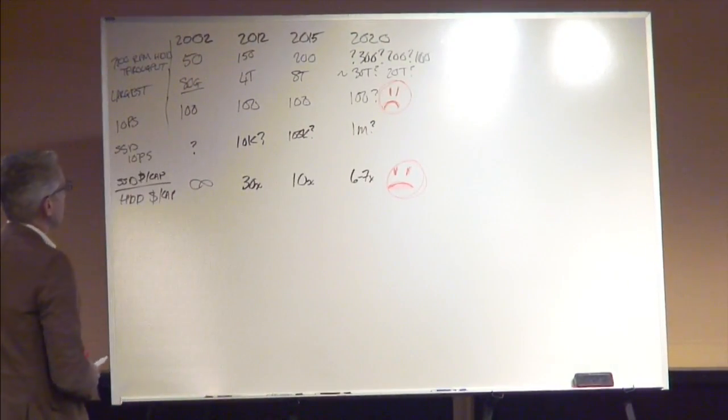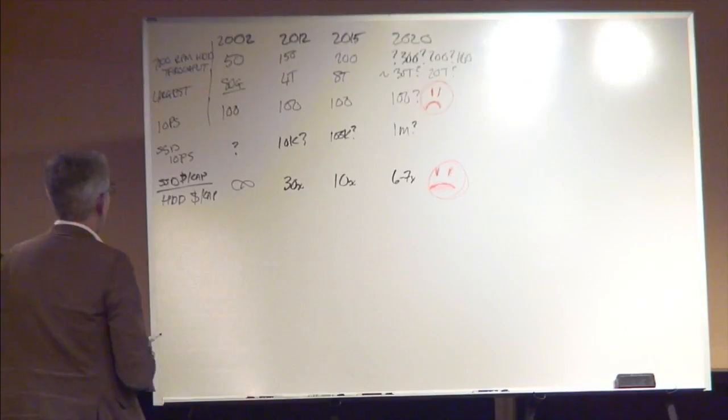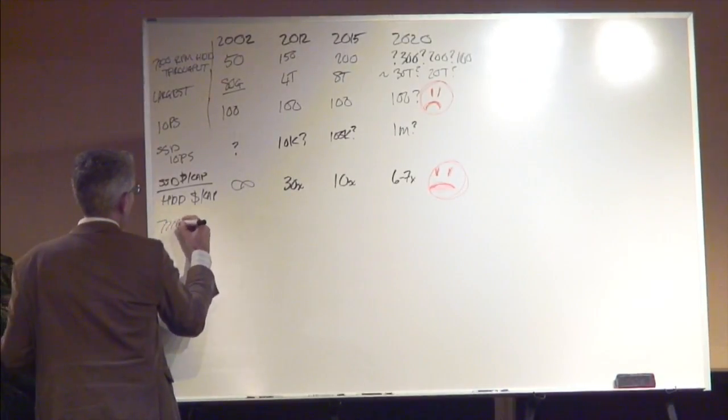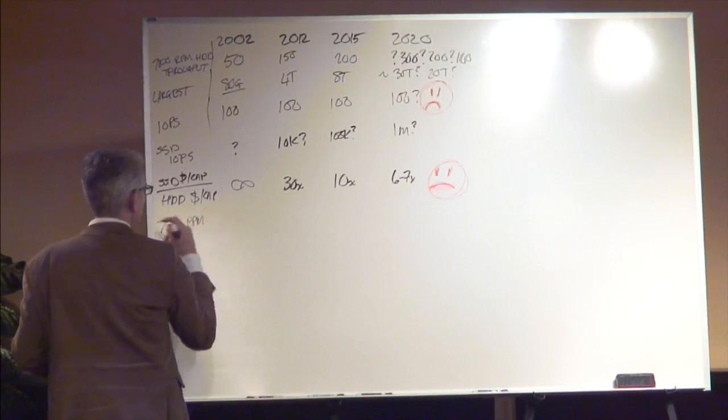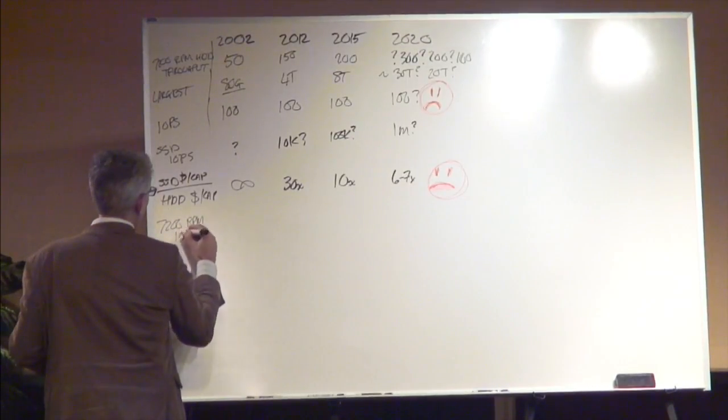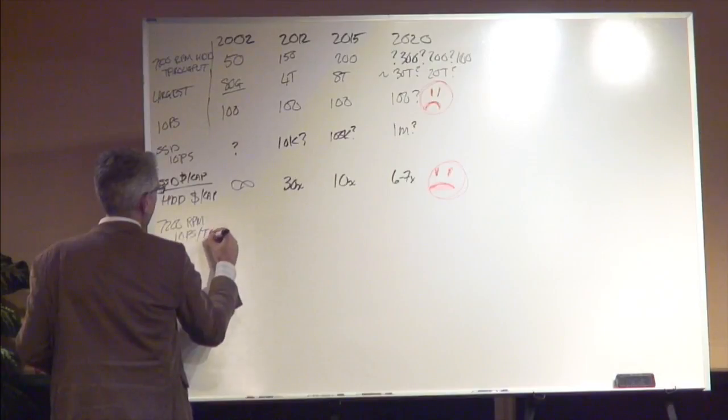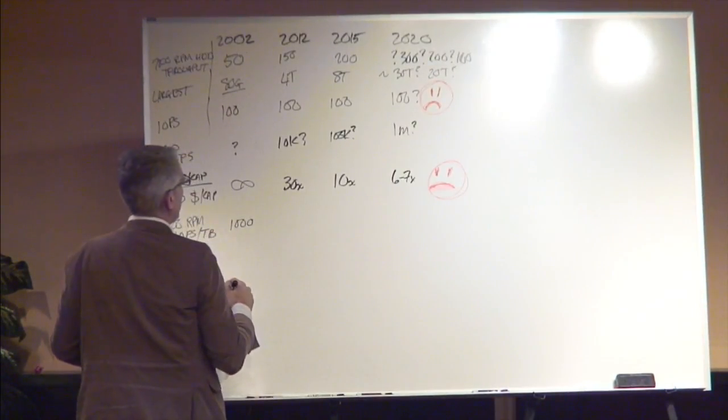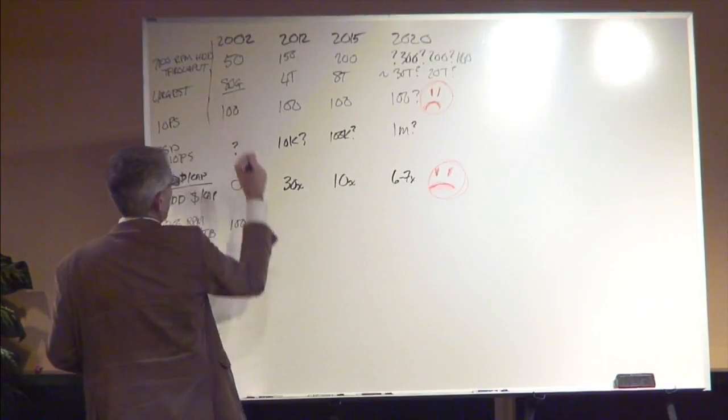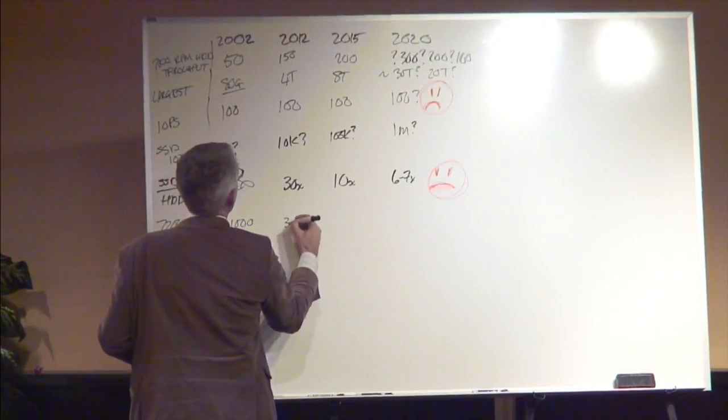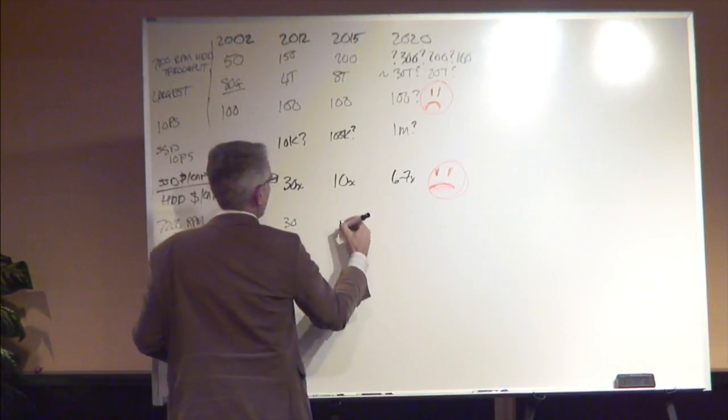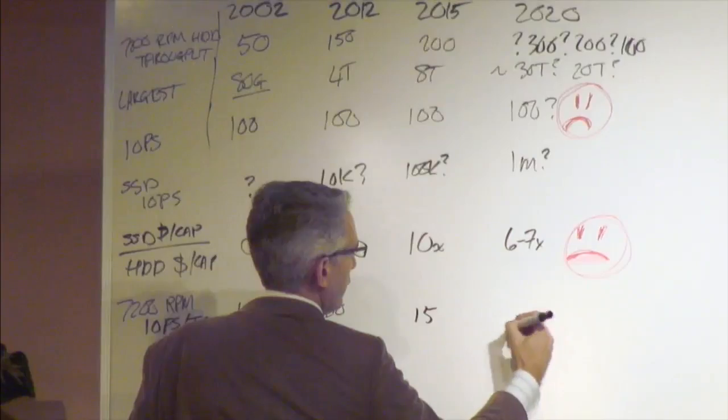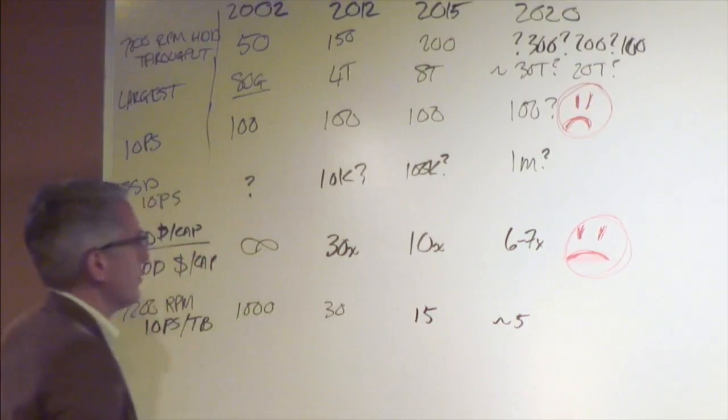Last stat that I care about here is 7200 RPM IOPS per terabyte. That was about a thousand per deployed terabyte in the world where we had 80 gig disks. It was about 30 in 2012, it's about 15 now, and it'll be five-ish in 2020.